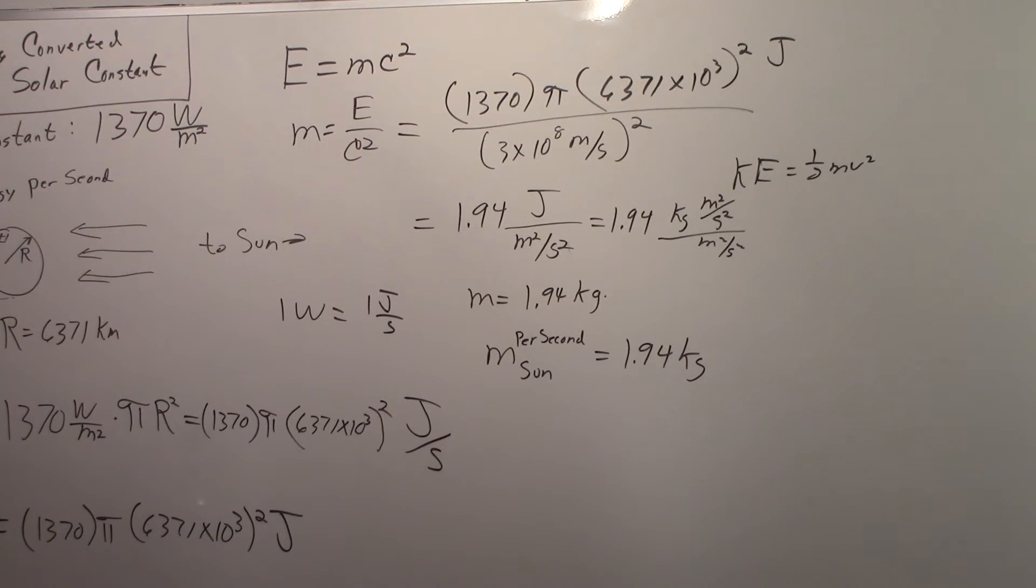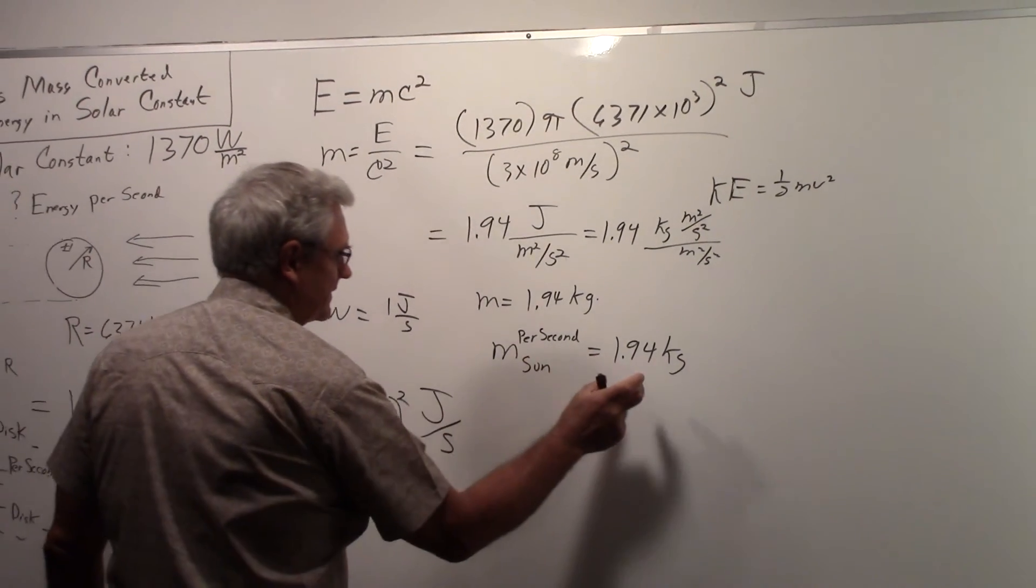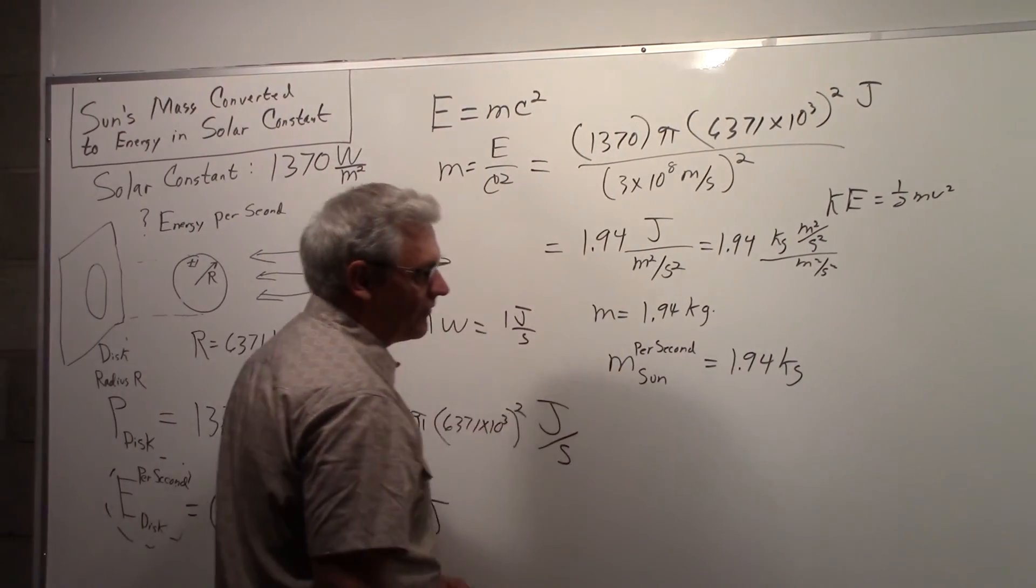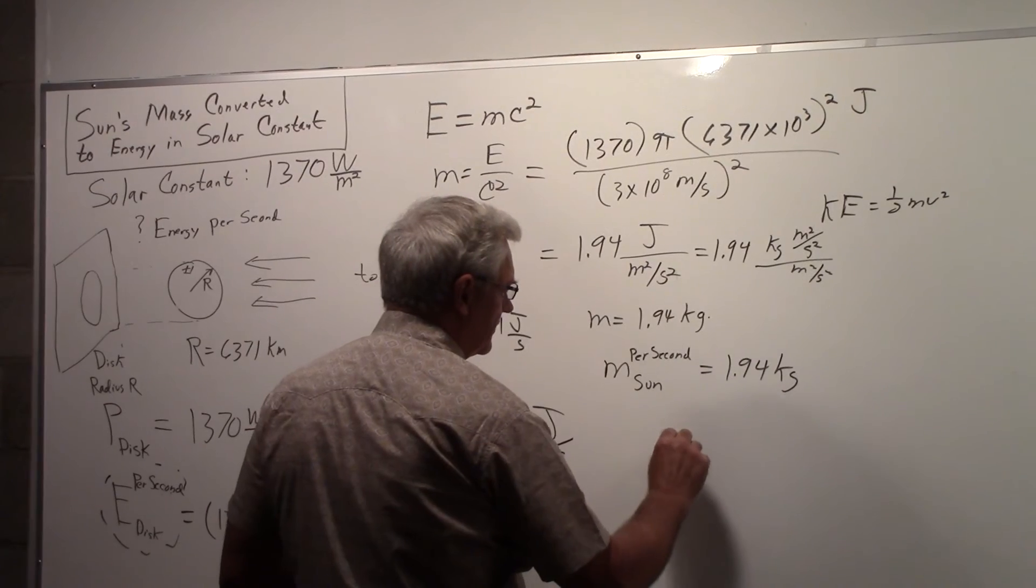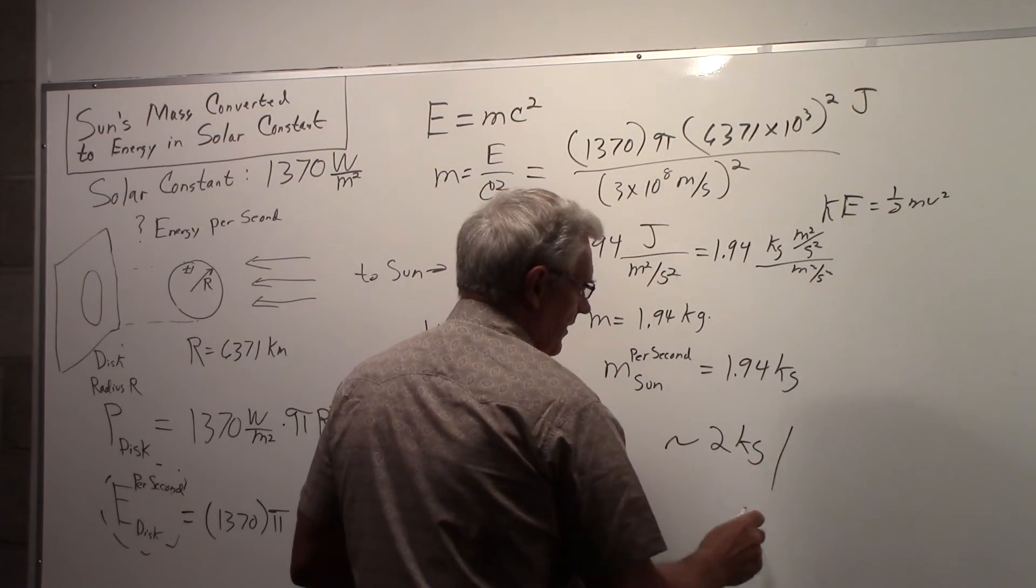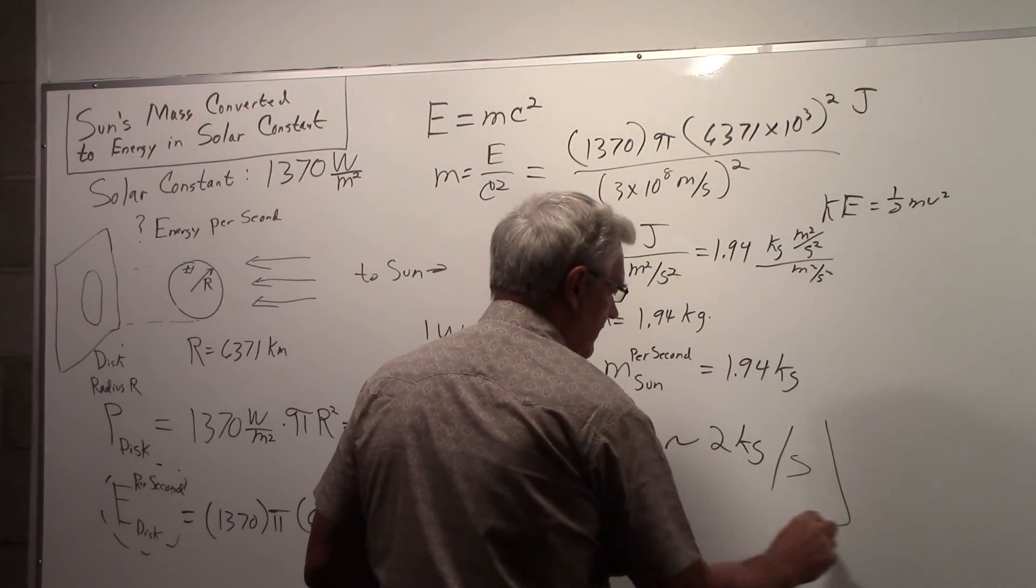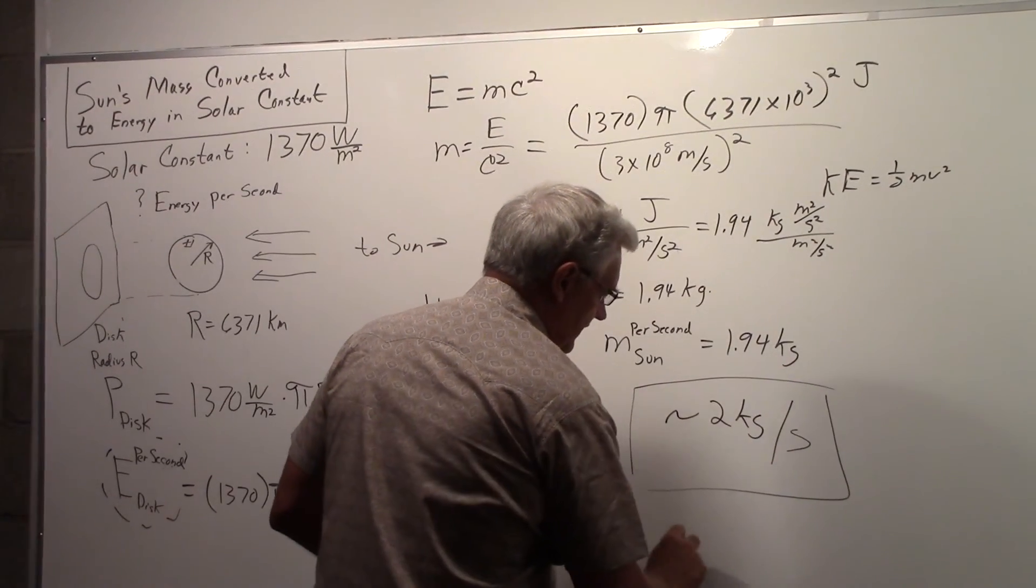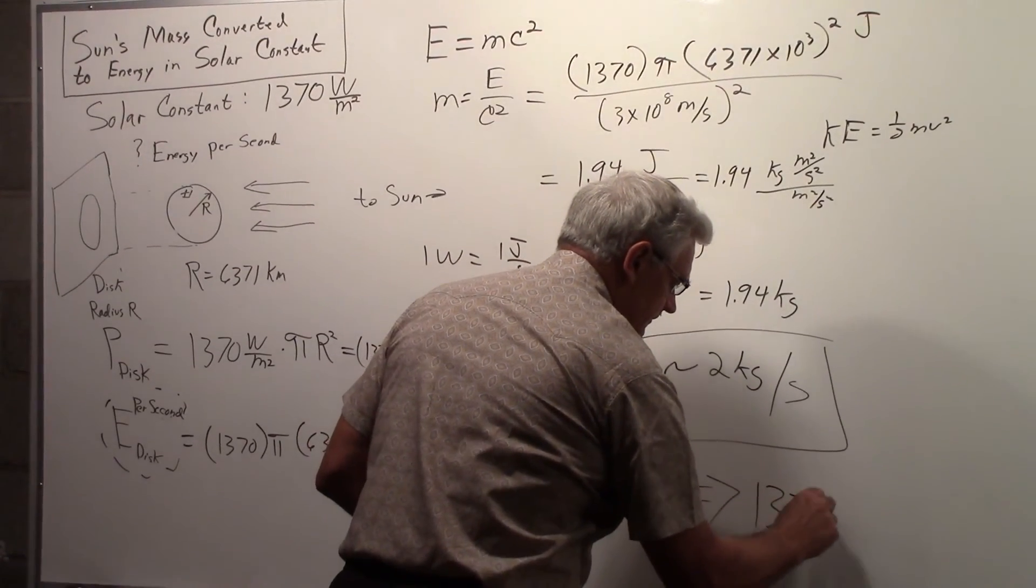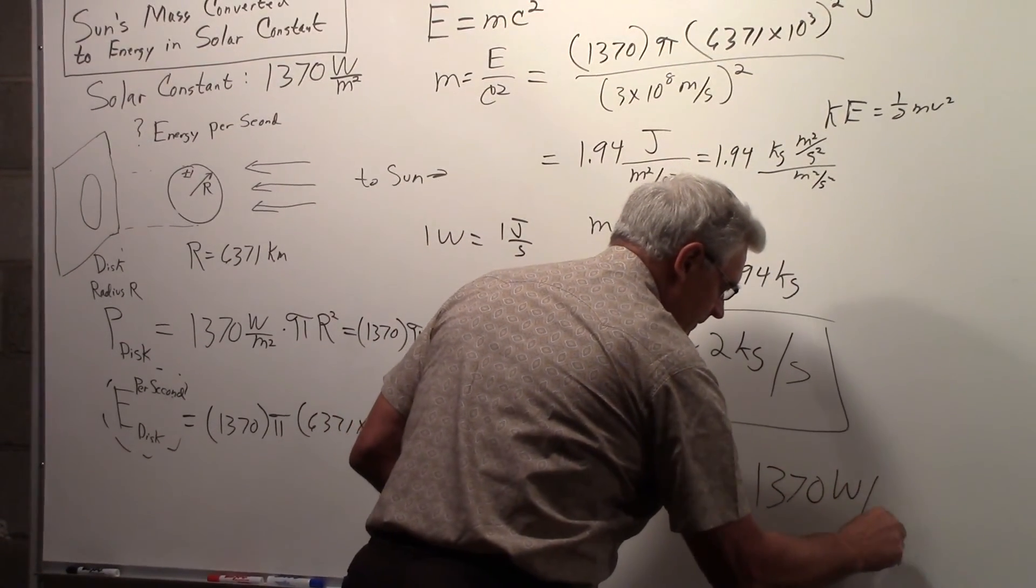So the solar constant powers life on Earth. And to do that, it's taking 1.94 kilograms. So it's approximately 2 kilograms of the sun being burned per second to produce the solar constant at the Earth.